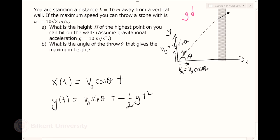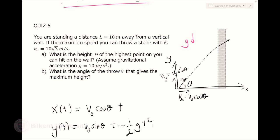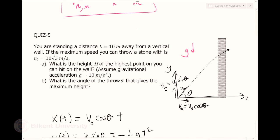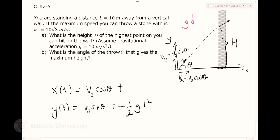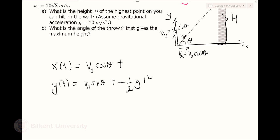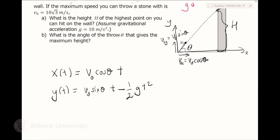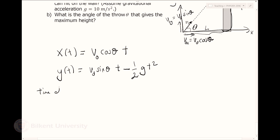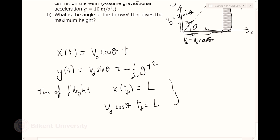And y(t) will be: initial velocity v0 sine theta times t, minus one-half g t squared. The minus sign is because acceleration is toward the minus y direction. I want to find the height my stone hits the wall. At that point, x = l. So let's find the time of flight: v0 cosine theta times tf equals l, so tf = l over v0 cosine theta.